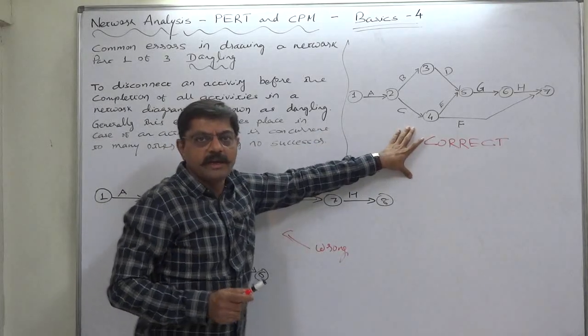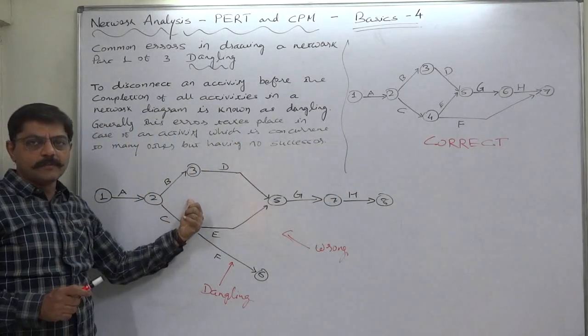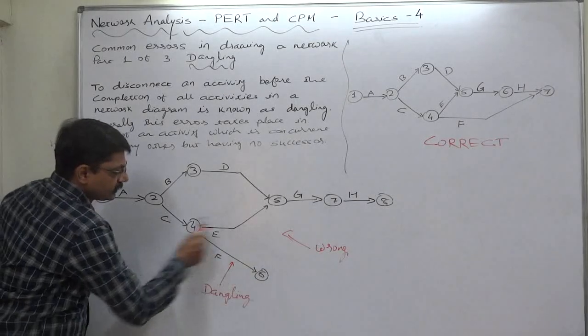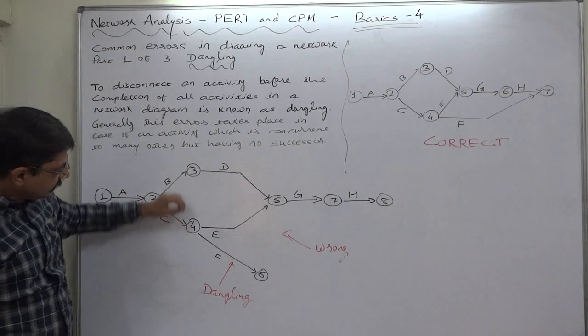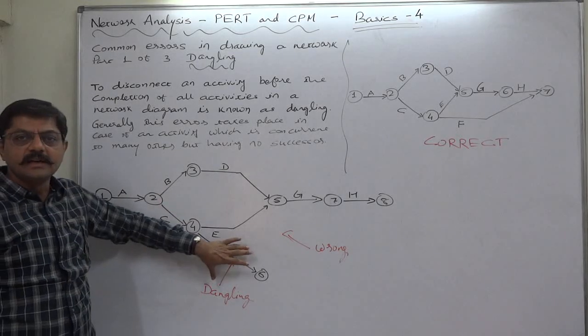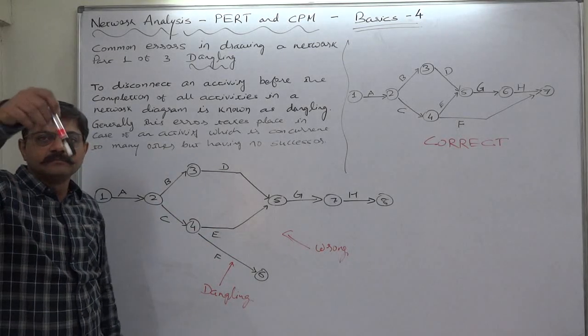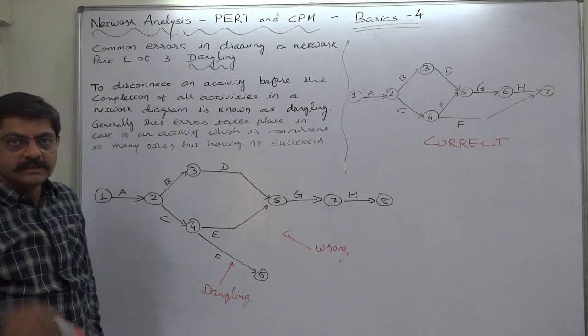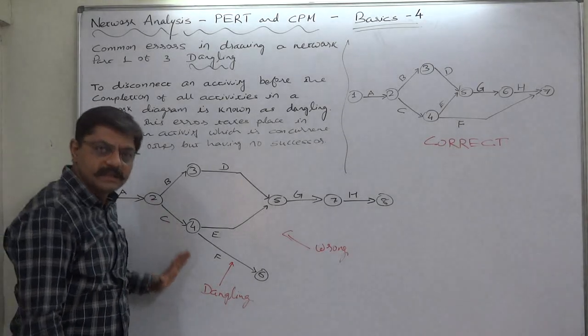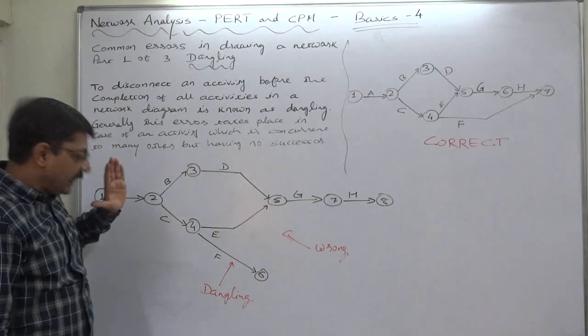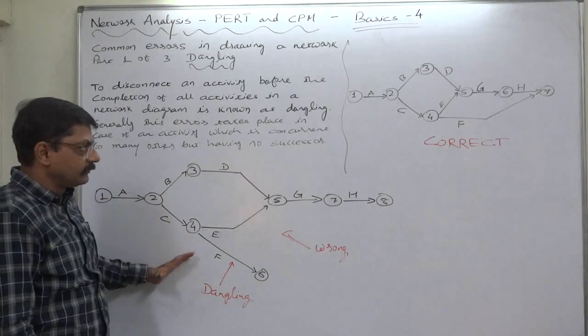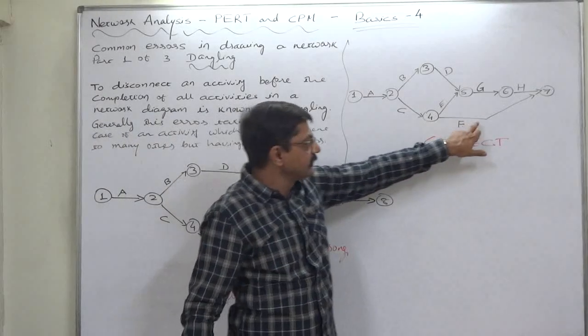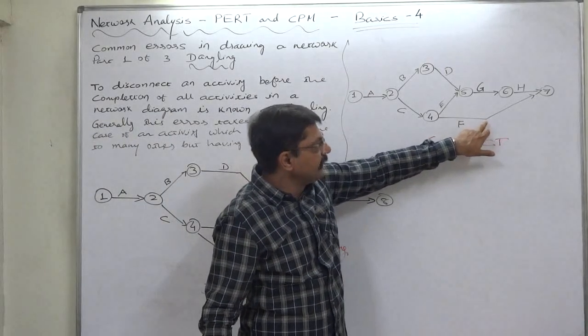...way of drawing the network diagram of this particular project. This is called the situation of dangling. The activity—it is something like event 4 is holding activity F loosely. This is not the correct way of presenting an activity having no successor in the network diagram. This is the correct way of presenting an activity having...